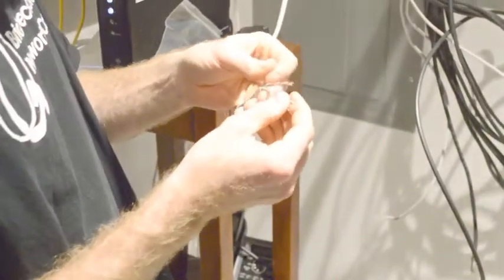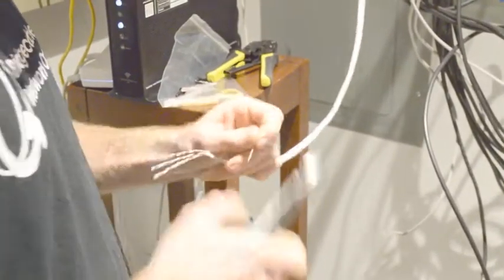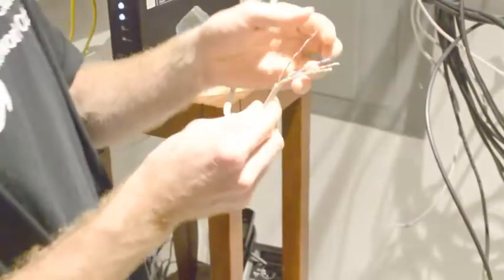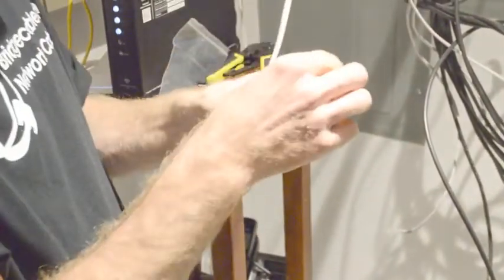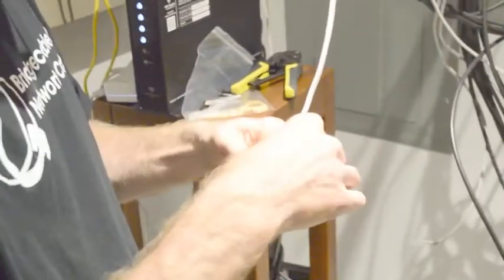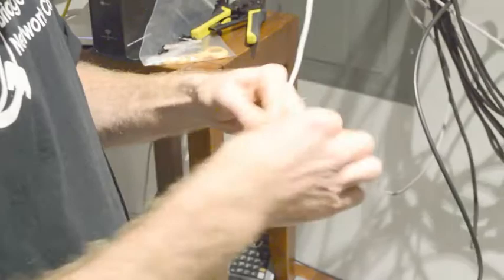And then there's a pull string that I like to trim off to keep it neat. And then we arrange these cable pairs in their color code sequence for T56B, which is what we're using.